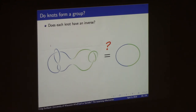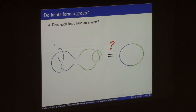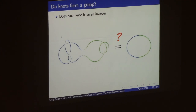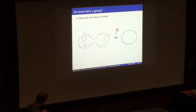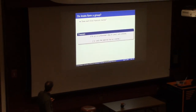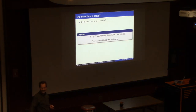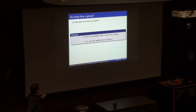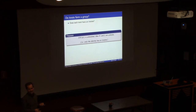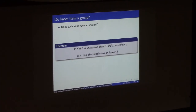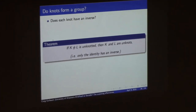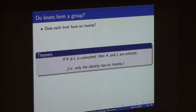Is it possible that, say, the mirror image of a knot spliced together with the original might unravel? To a lot of people this is really not obvious at all — that's what you want in a good theorem. Well, the theorem is bad news on one level: there are no non-trivial inverses. The only knot that has an inverse is the identity element itself. If you have an honest-to-goodness knotted knot, you're not going to be able to undo that knot just by splicing something else onto it.